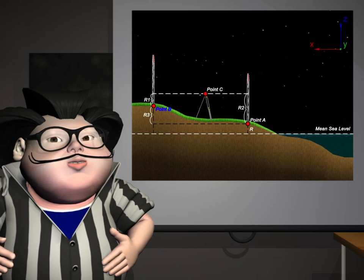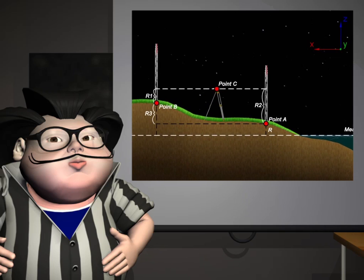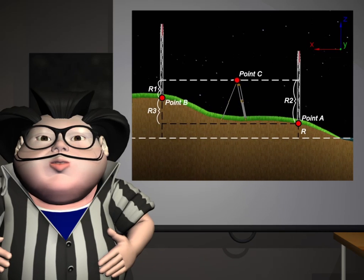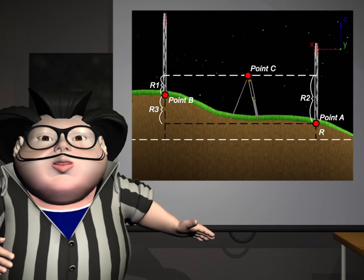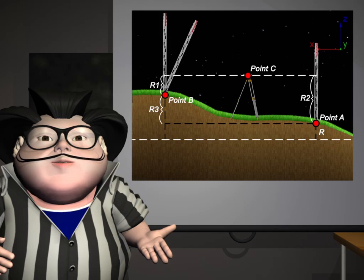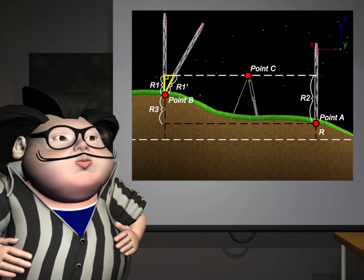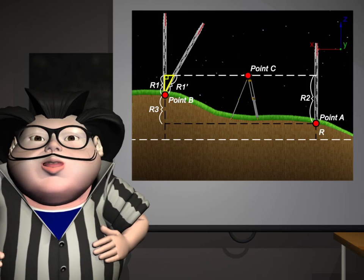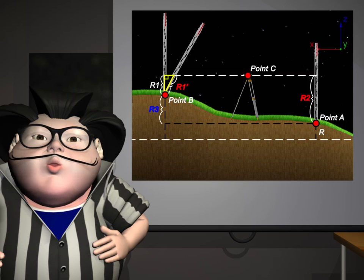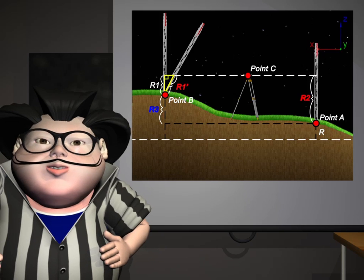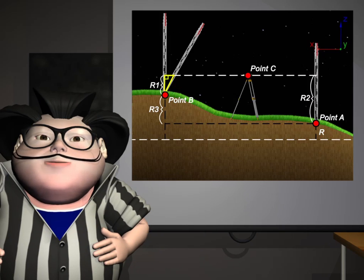Good leveling practices. The level rod must be perpendicular to the level surface. Else, the difference of point B and point C is R1 prime. R3 is not equal to R2 minus R1 prime. This would lead to an inaccurate elevation for point B.